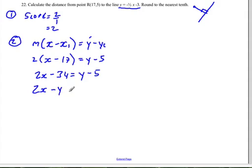So this is going to be 2x minus y minus 34 plus 5 equals 0, which simplifies to be 2x minus y minus 29 equals 0.